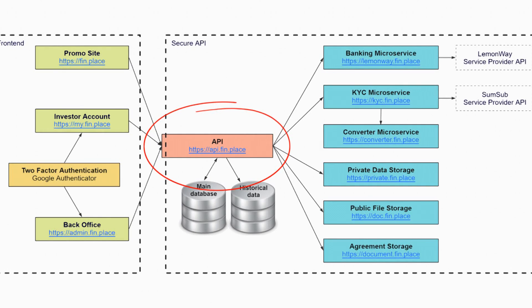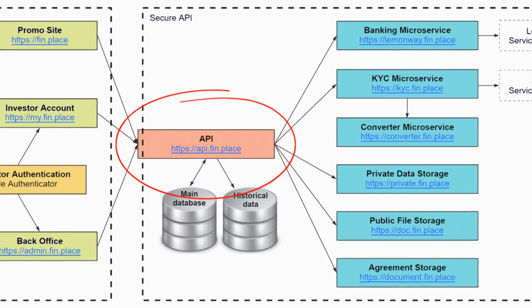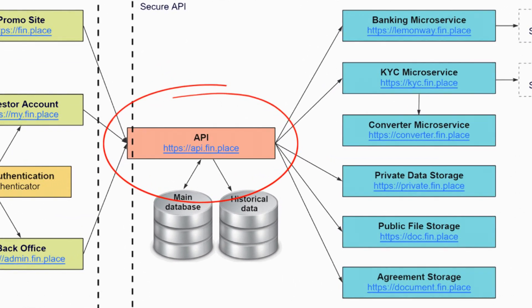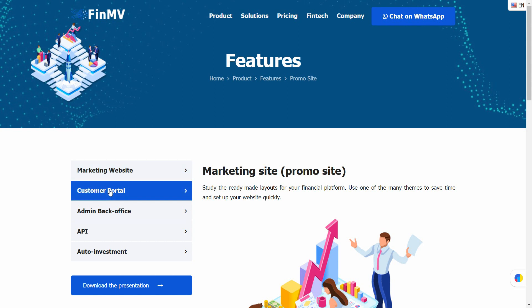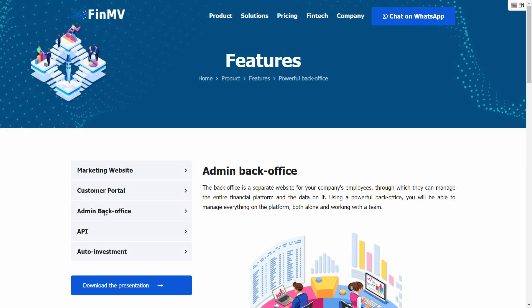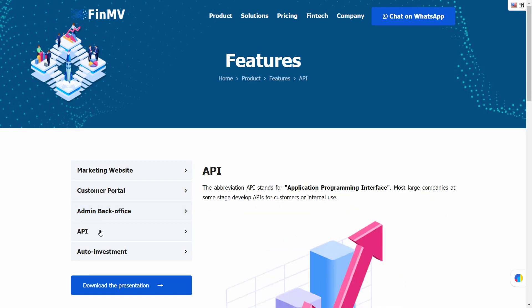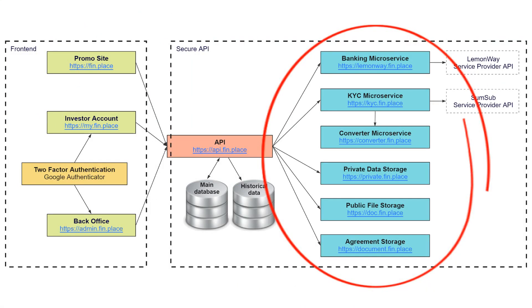A secure API — through which the promo website, customer account, and back office interact with databases and information repositories — is the fourth website. It can be identified as the brain of the system, while the previous three represent a visual interface. Integration with other systems is possible via this API.